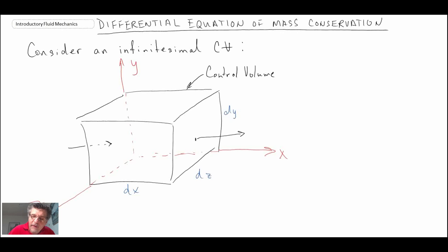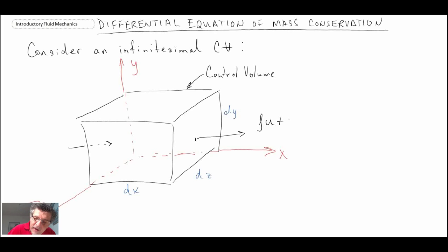On the front surface, we know mass flux is going to be rho u times area. But if it's a Taylor series expansion, we have to add in the change. This is assuming that we're expanding about the very center of our control volume cube.